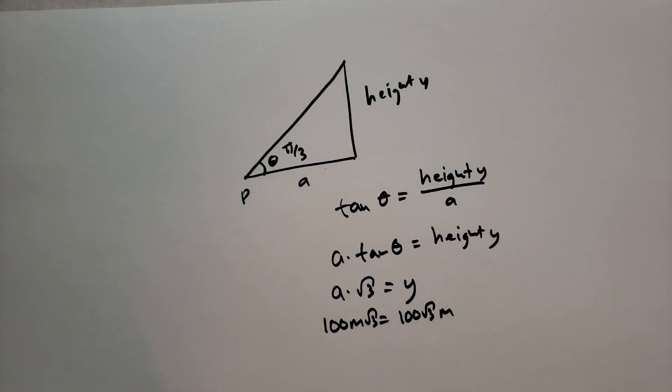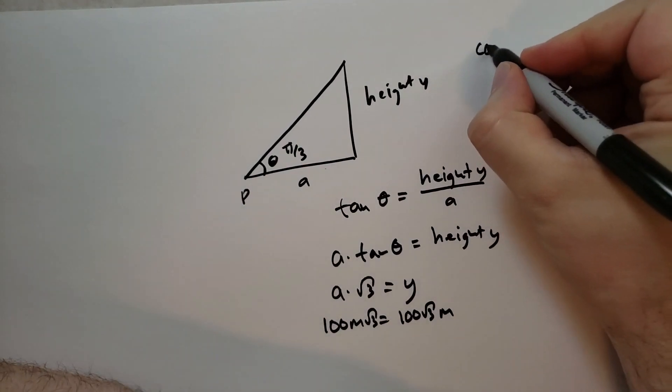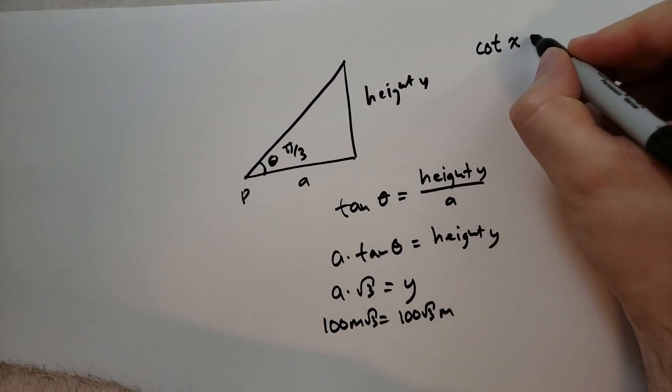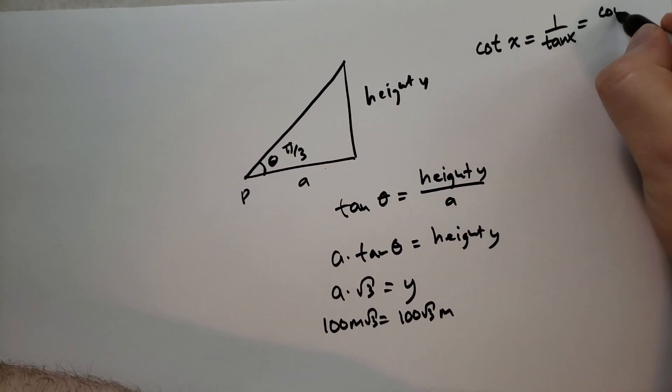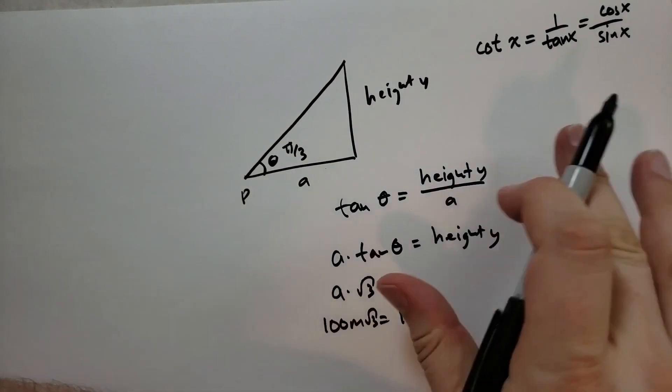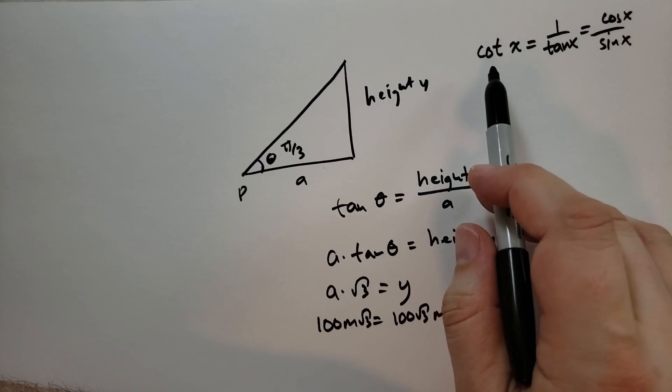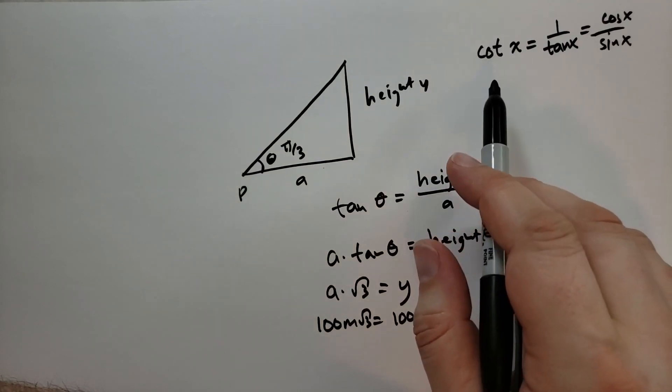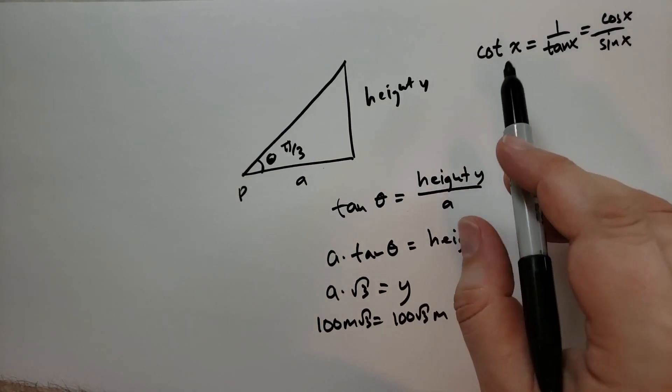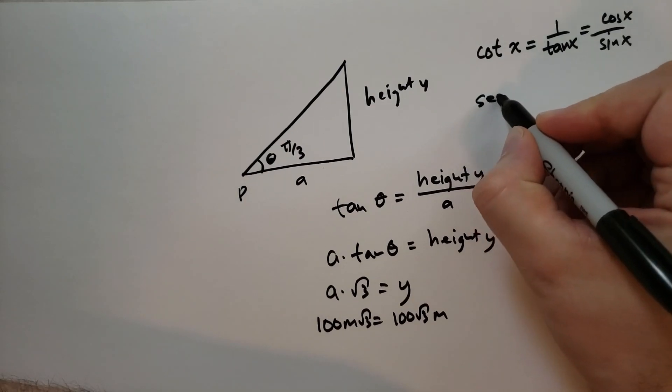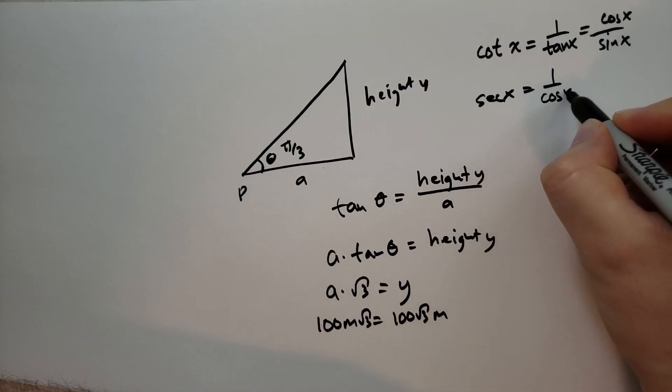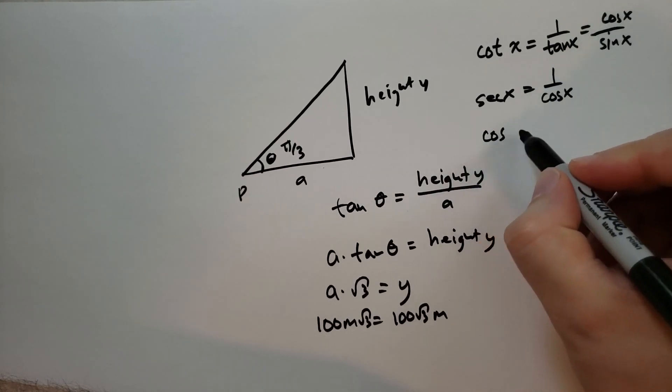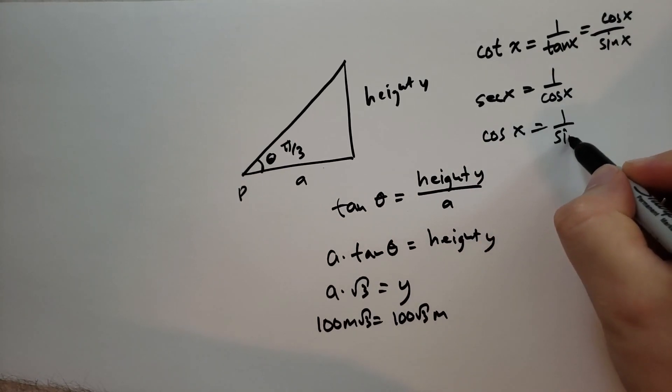So cotangent of the angle X is going to be one over the tangent of X, which is just cosine of X over sine of X. It has a special different kind of property. There's a relationship between sine and cosine, I'm sorry, cotangent and tangent. We also define secant of X to be one over cosine of X, and we define the cosecant of X as one over sine of X.